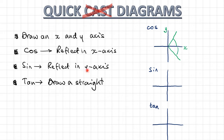If you're solving a trig equation for sine, you find your first solution on the calculator — something like this. But what you do is you reflect that line in the y axis. So that means that these two angles are the same.